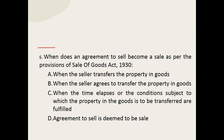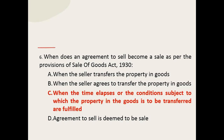Q6: When does an agreement to sale become a sale as per the provision of the Sale of Goods Act? The options include: when the seller agrees to transfer the property in goods; when the time elapses or the condition subject to which the property in goods is to be transferred are fulfilled, then the agreement to sale is deemed to be a sale. The correct option is: when the time elapses or the conditions subject to which property in goods is to be transferred are fulfilled.